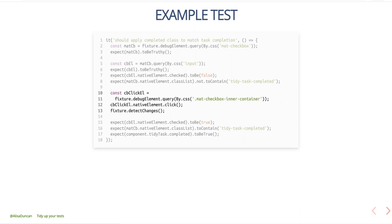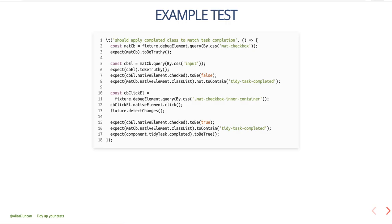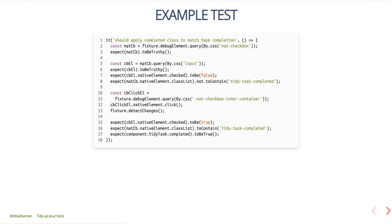Now we want to check the checkbox. To do so, we query the DOM again to find the clickable element of the Material checkbox — that's the selector mat-checkbox-inner-container. Notice we'd only know this by looking at the mat-checkbox code or by digging around in Chrome DevTools. So we query for mat-checkbox-inner-container and click, then run change detection. Then we go back to the input element to verify the checkbox is checked, and verify that tidyTaskCompleted is in the class list. That was a lot — we had to query the DOM extensively and understand the internal workings of mat-checkbox, and it's not clear at a glance what we're doing.